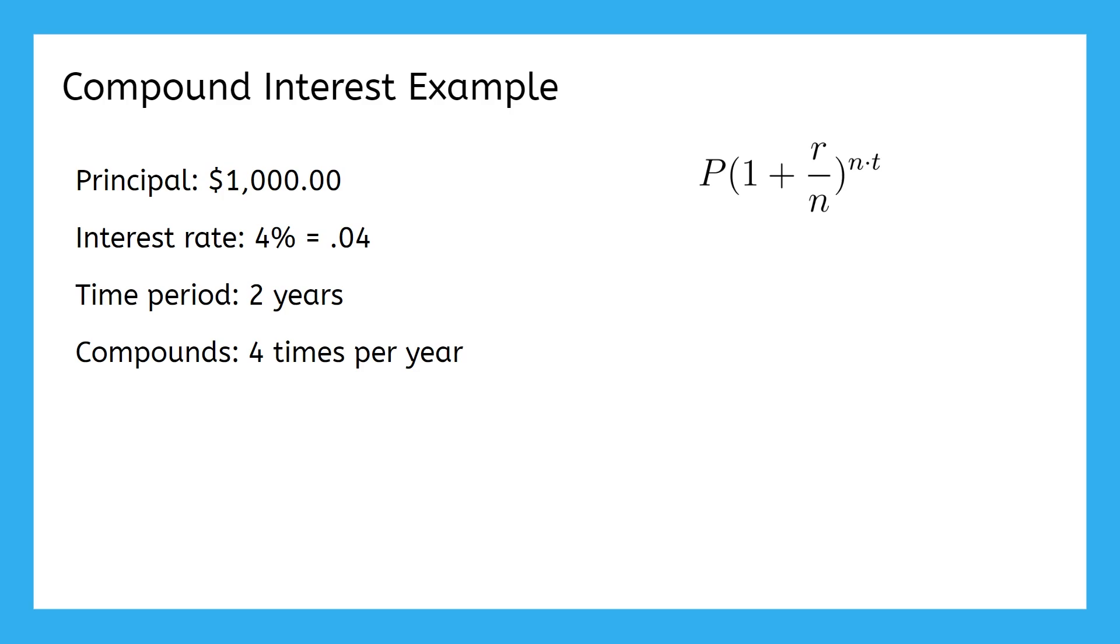When we plug in all of our variables, this is what we get. The easiest way to evaluate it is to type it into a calculator, just like this. That symbol before the exponent is called a caret, and the button usually looks something like this. You can use it anytime you need to type an exponent into your calculator. Once we type it in, we just hit enter, and we get this answer. We started with $1,000 and gained $82.86 in interest.